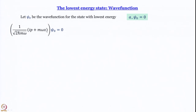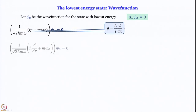We know that the x operator is just multiplication by the position x, and the momentum operator p is ℏ/i · d/dx. What we need to do is set up an equation in ψ₀. Taking the expression for the momentum operator and plugging it into the expression for a₋, we get: 1/√(2ℏmω) × (ℏ · dψ₀/dx + mωx·ψ₀) = 0. This is a first-order differential equation.